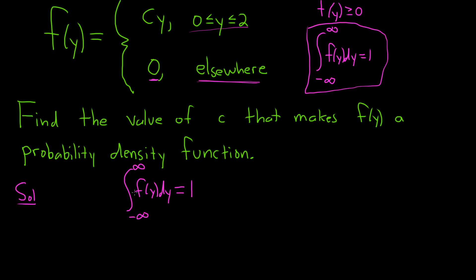When we're going from negative infinity to infinity, all the other integrals are going to be the integrals of zero, and those are all going to become zero because they're definite integrals. So basically we only have to integrate from zero to two cy dy, and we want this to be equal to one.